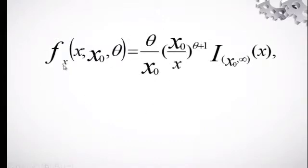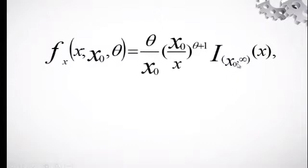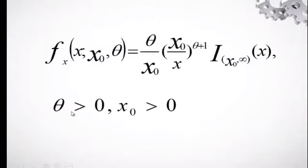The Pareto PDF is given as f(x; x₀, θ) = (θ / x₀) · (x₀ / x)^(θ+1), with the indicator that x is greater than x₀. Here theta is greater than zero and x sub zero is greater than zero.